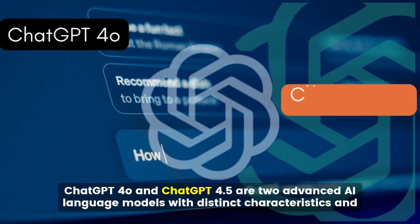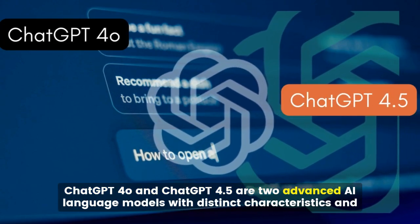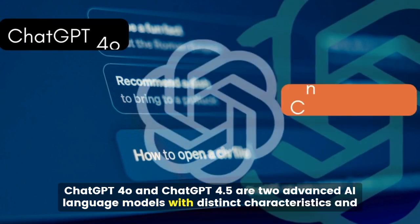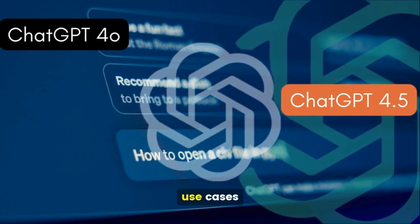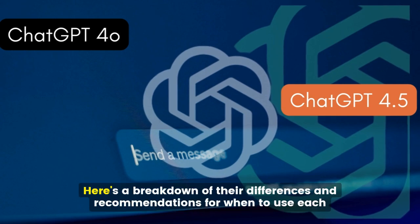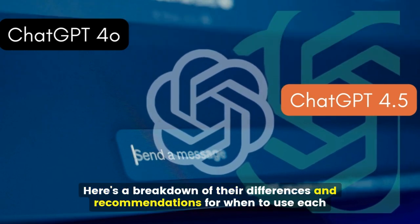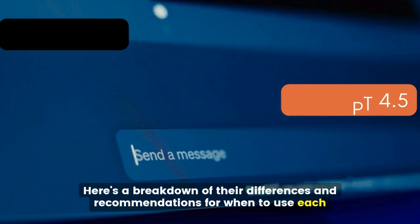ChatGPT 4.0 and ChatGPT 4.5 are two advanced AI language models with distinct characteristics and use cases. Here's a breakdown of their differences and recommendations for when to use each.